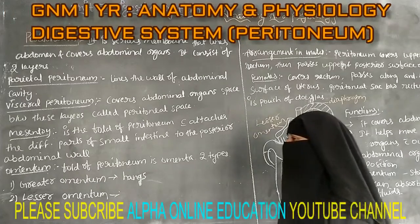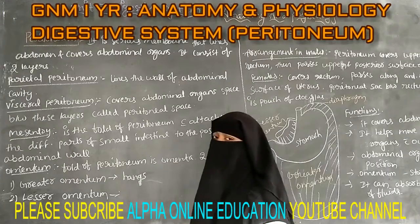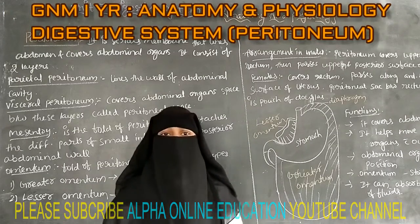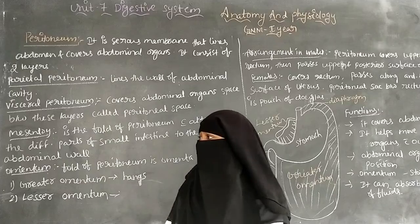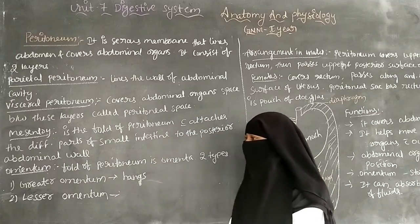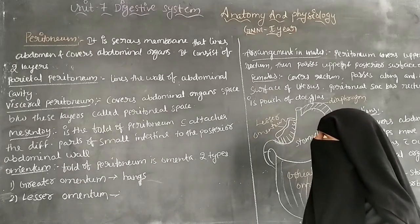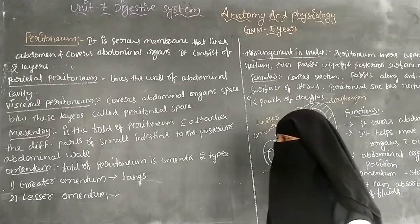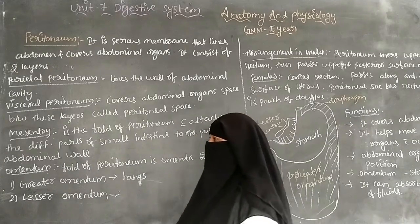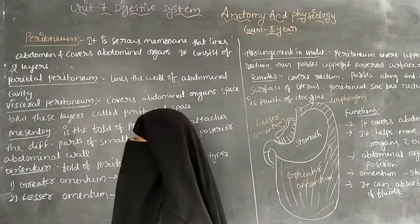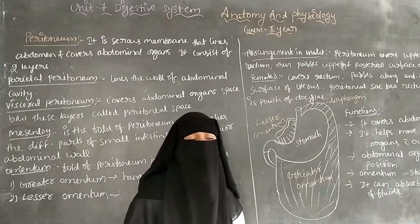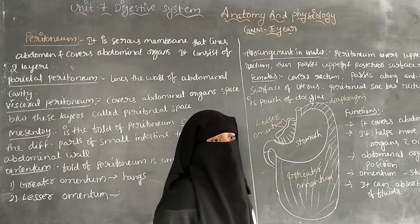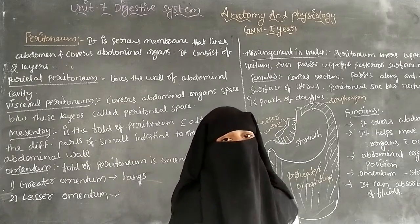We are going to discuss anatomy and physiology for GNM first years. In this, we are going to discuss unit 7, that is the digestive system. In this digestive system, we have covered up to the large intestine.